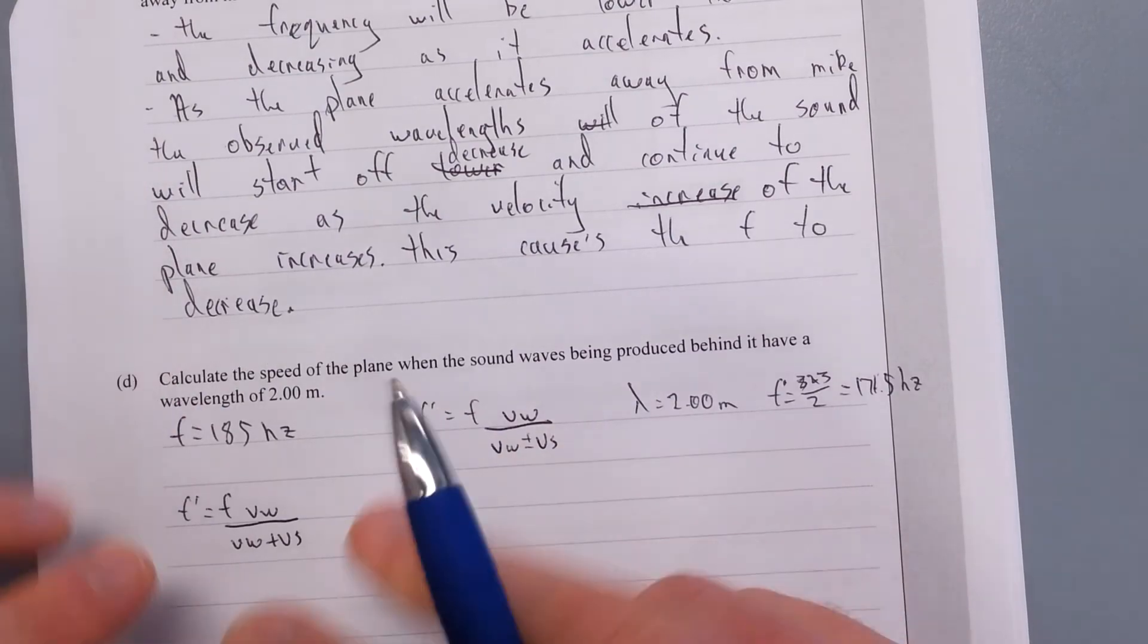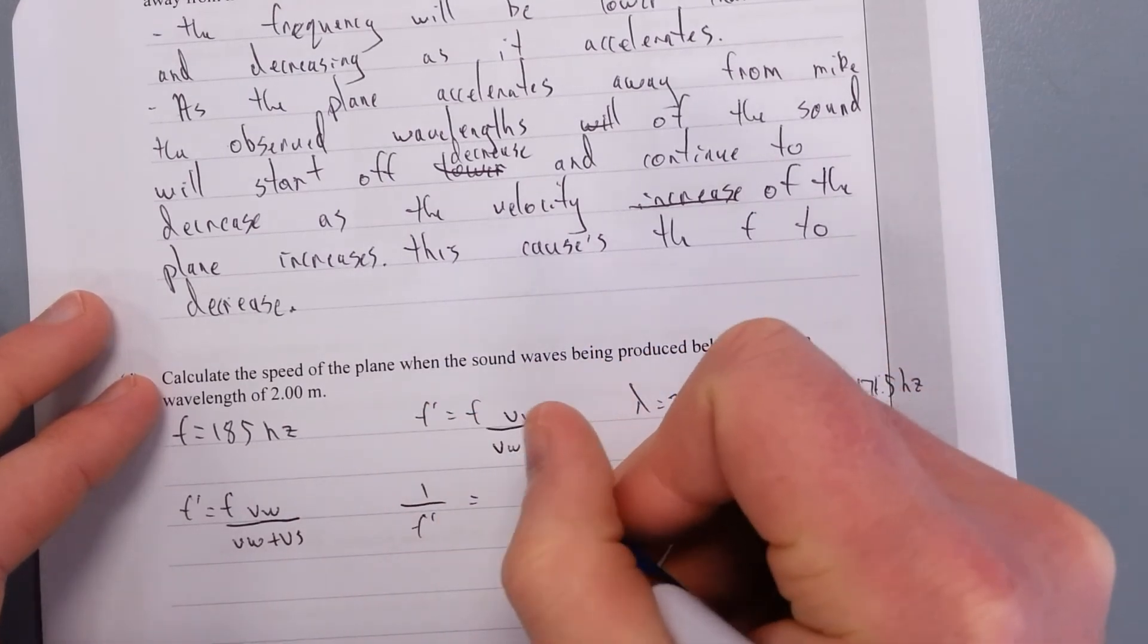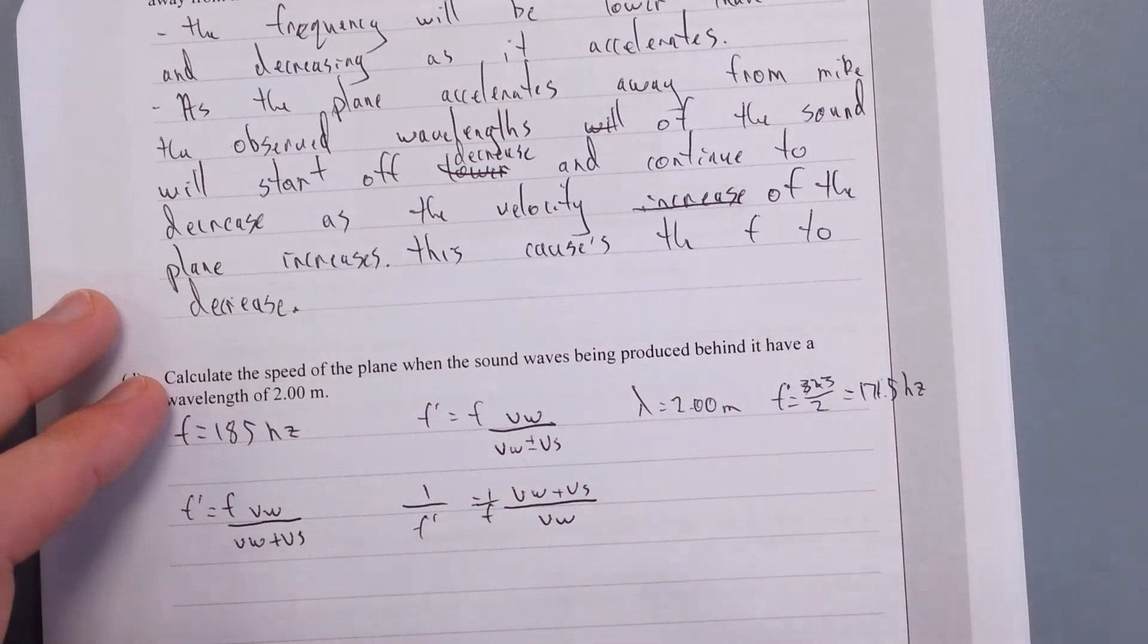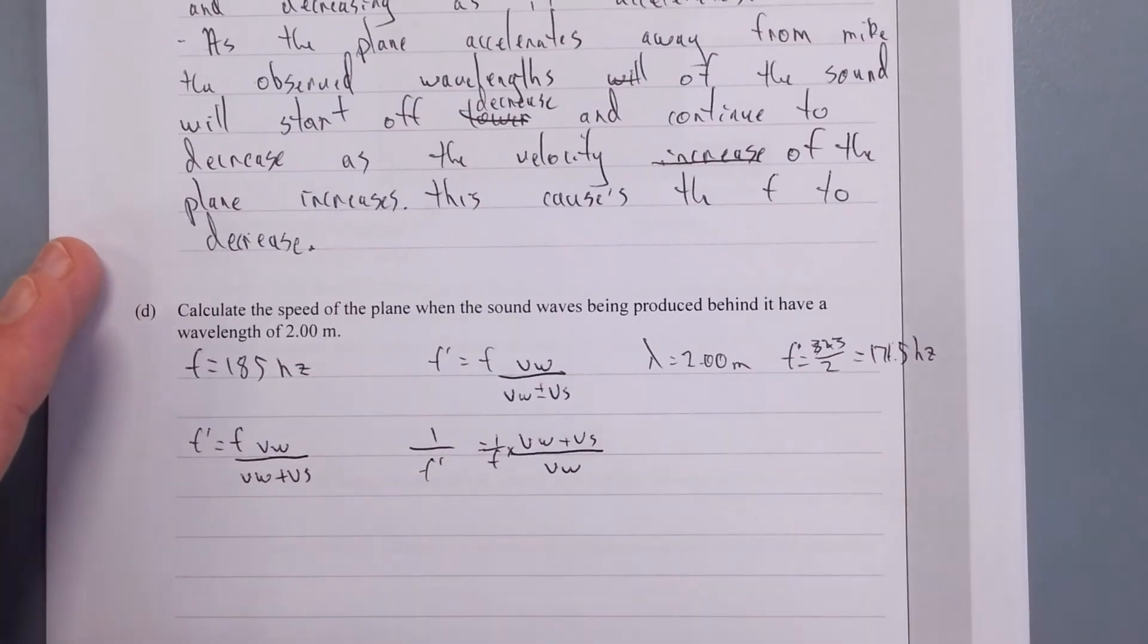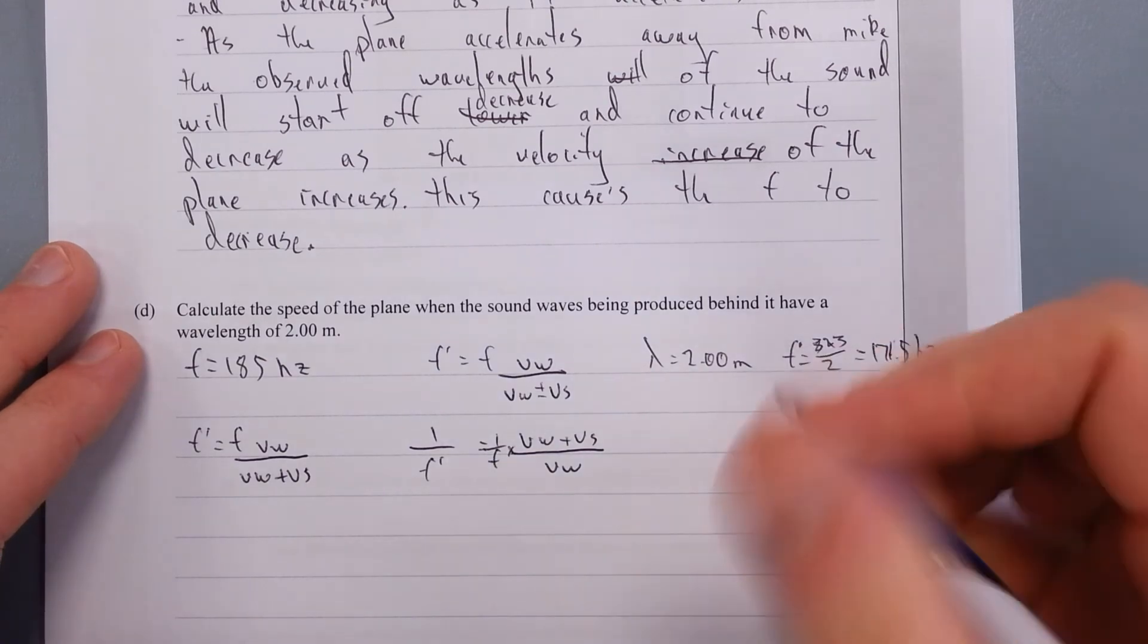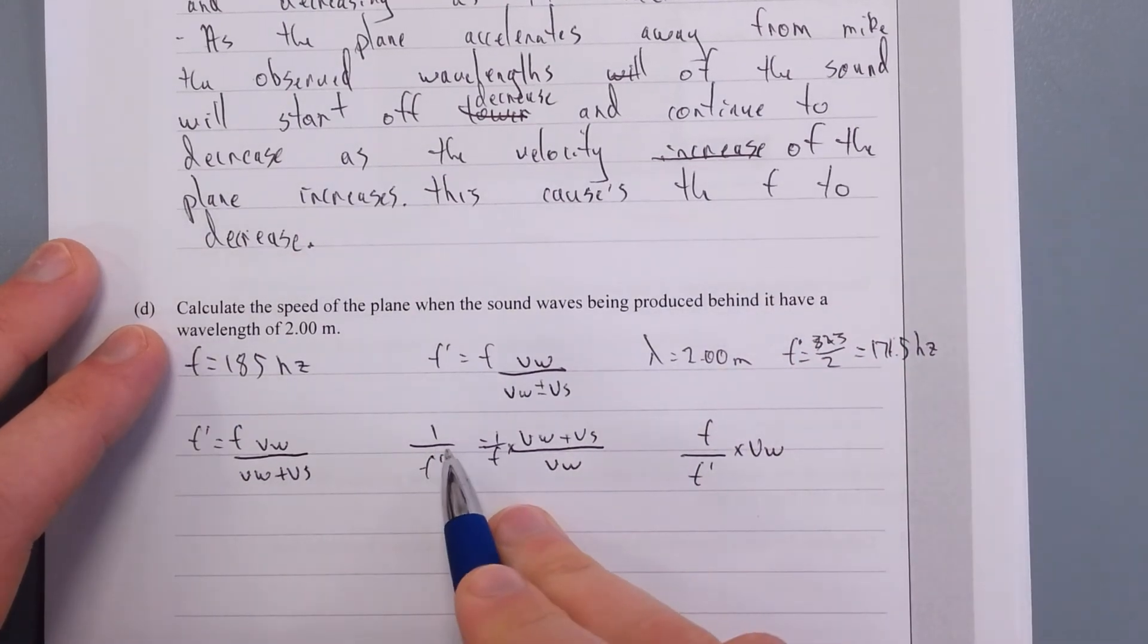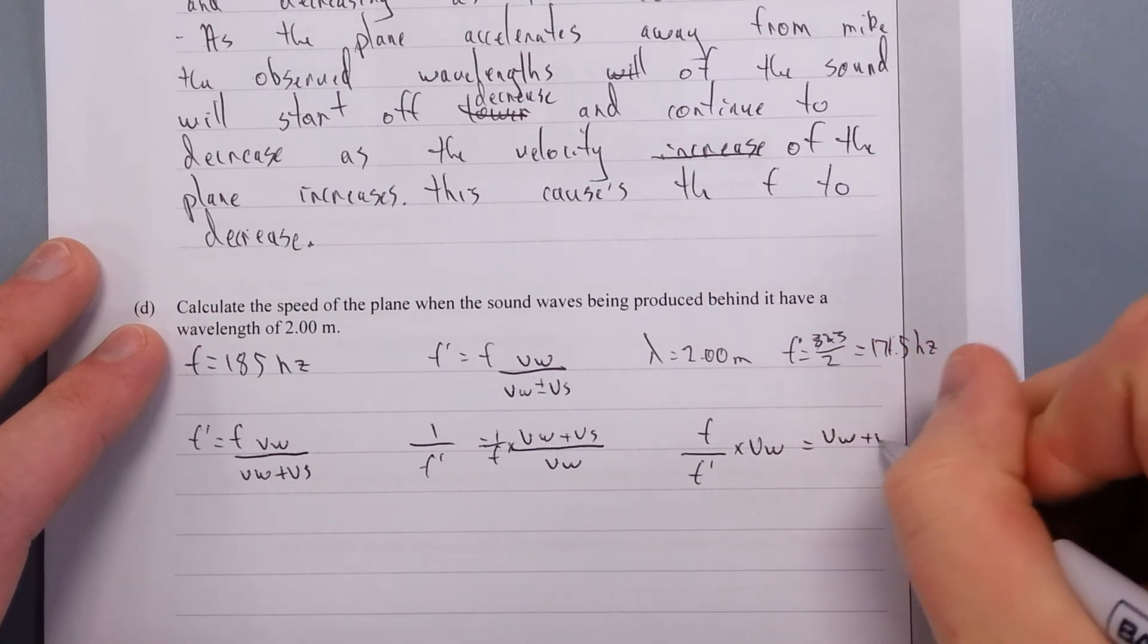I've got everything I need. All I want to try and do is find V_S. Let's do a little bit of algebra wizardry. What should we do? We'll just flip everything upside down. So 1 over F dash is equal to V_W plus V_S over V_W times 1 over F. What I'm going to do is I'm going to times both sides by F and I'm going to times both sides by V_W. So I'm going to get F over F dash times V_W is going to equal to V_W plus V_S.